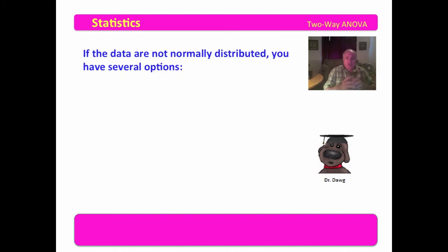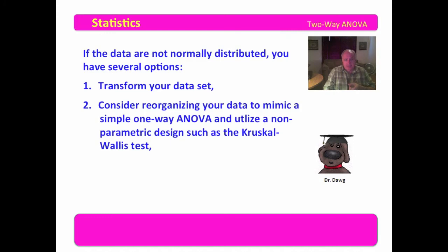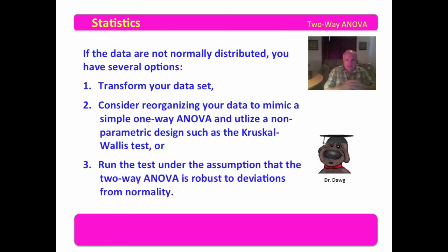If the data are not normally distributed, you have several options. Again, you can transform your data set. You can consider reorganizing your data to mimic a simple one-way ANOVA and utilize a non-parametric design such as the Kruskal-Wallis test — though keep in mind the Kruskal-Wallis H test assumes the data are balanced with the median. Or you can run the test under the assumption that the two-way ANOVA is robust to deviations from normality, finding an expert who agrees you can proceed — though the danger remains that experts disagree on this.